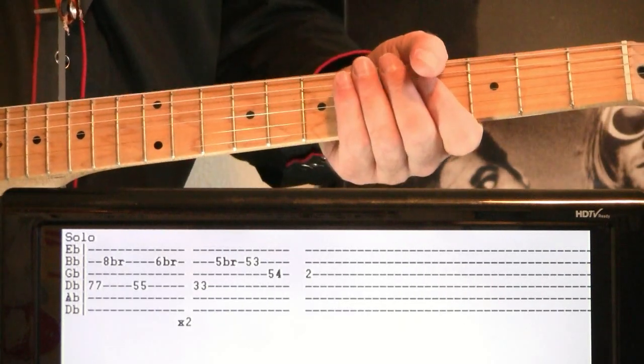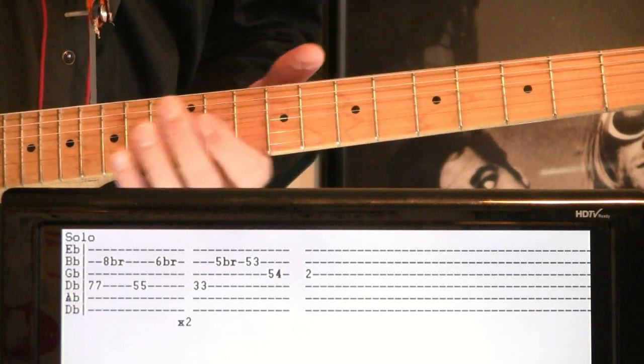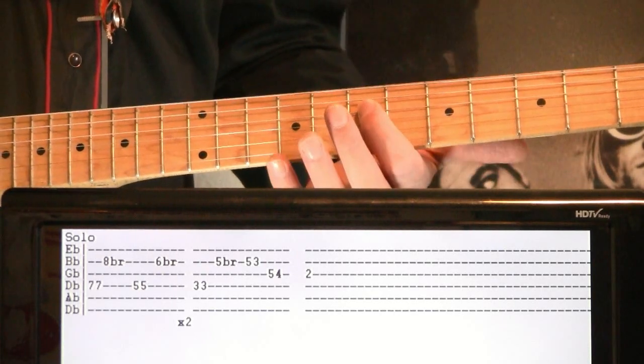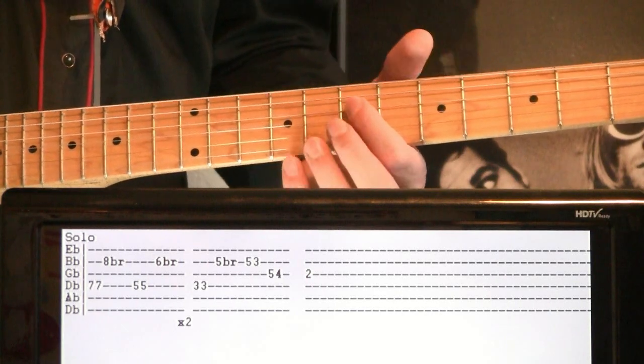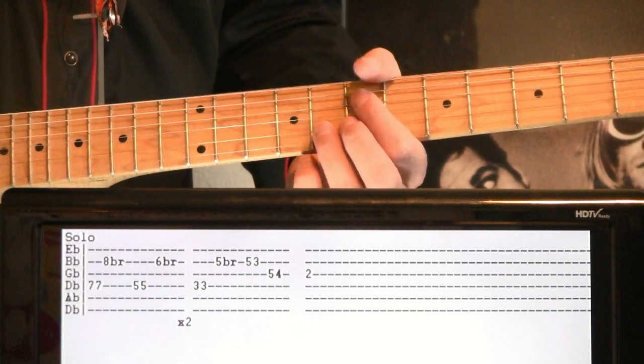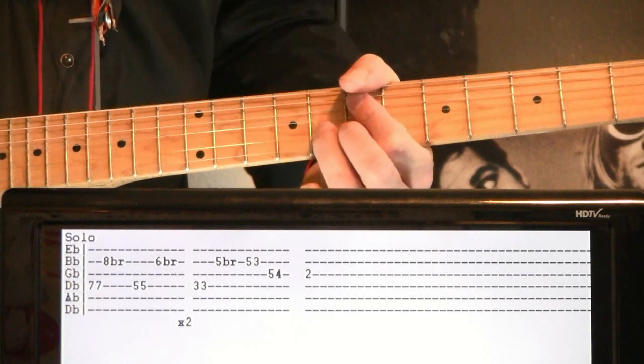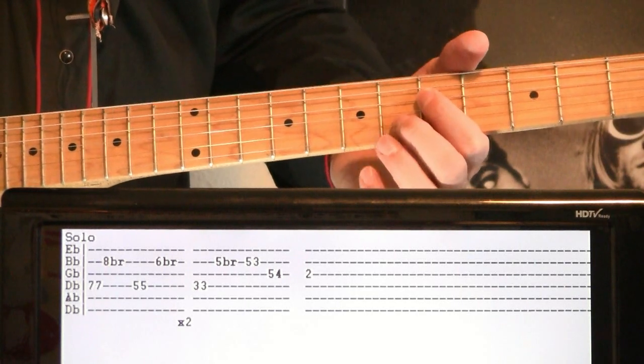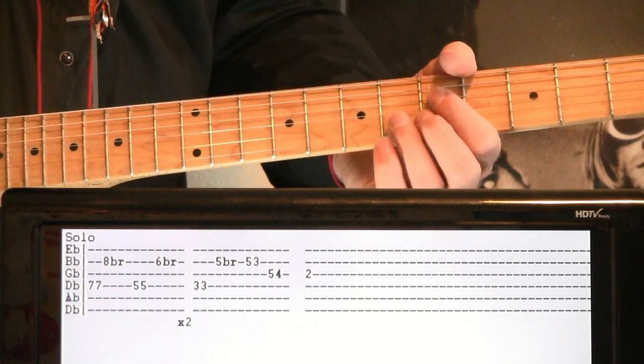Now we get our nice funky Nirvana solo here, real nasty sounding. We come off to seven on the middle D, hit that a couple times, and then we bend eight and release on the B. Shift it down - a couple fives on the middle D, bend the six on the B, release it.